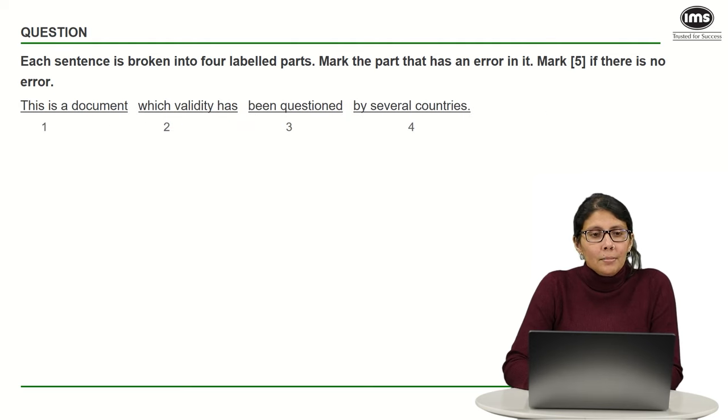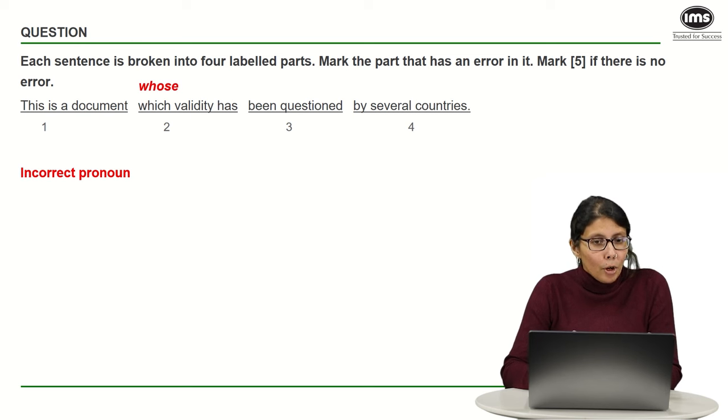The last question here. This is a document which validity has been questioned by several countries. See if you can spot the error. Again, fairly simple question. We are referring to a document, which is fine, but then we are referring to the validity of the document. In other words, we should be using a different pronoun. We should not be using which. We should be using whose because we want to say the document's validity.